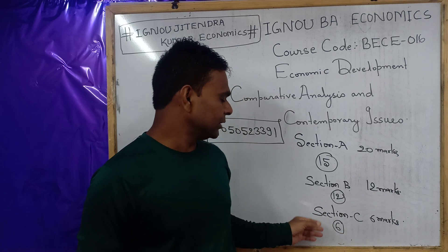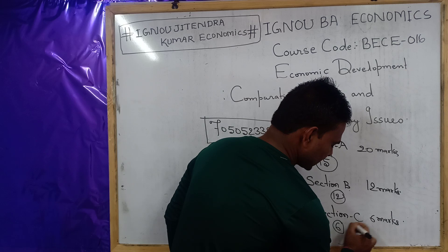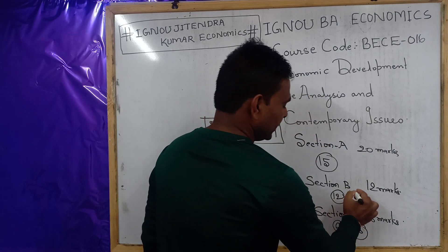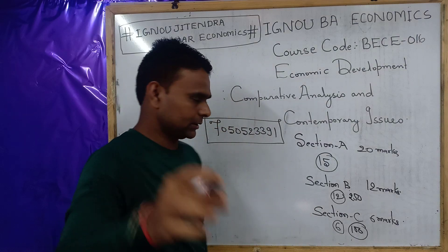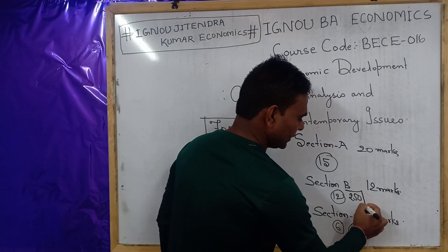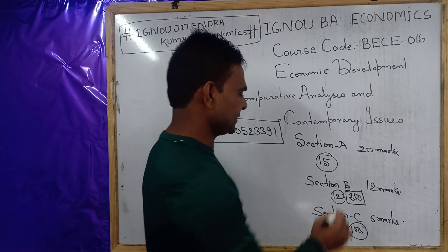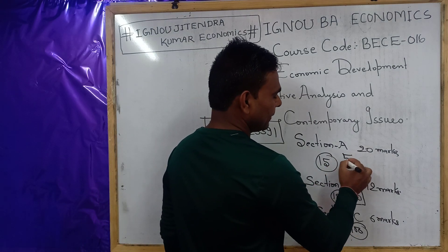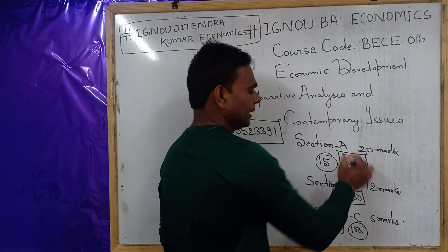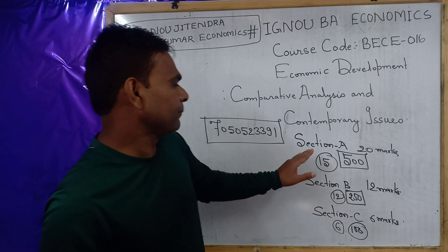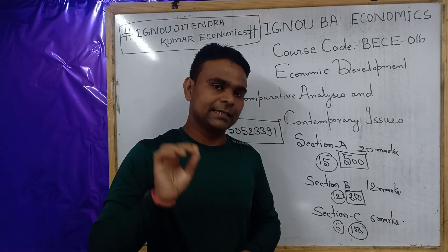For Section C, you need to write around 100 words per question. For Section B, you need to write around 250 words per question, as instructed on your question paper. And for Section A, each question requires around 500 words.